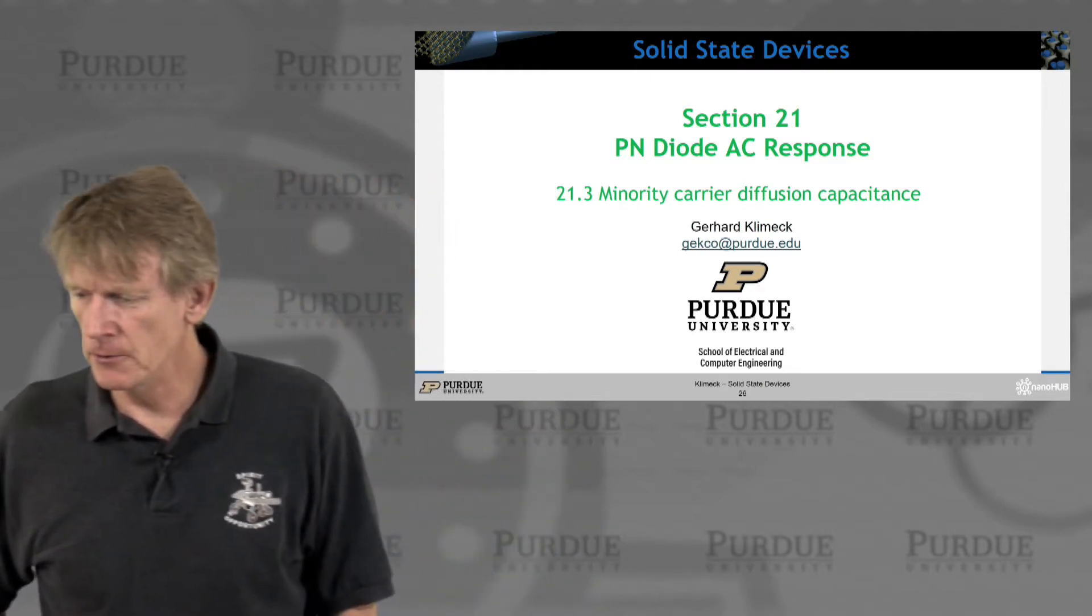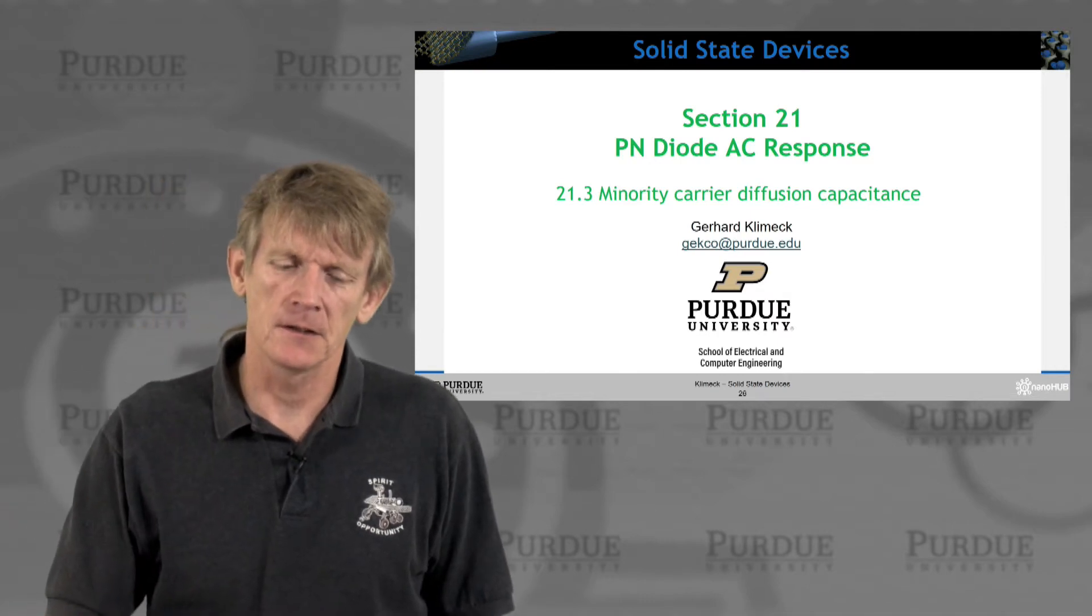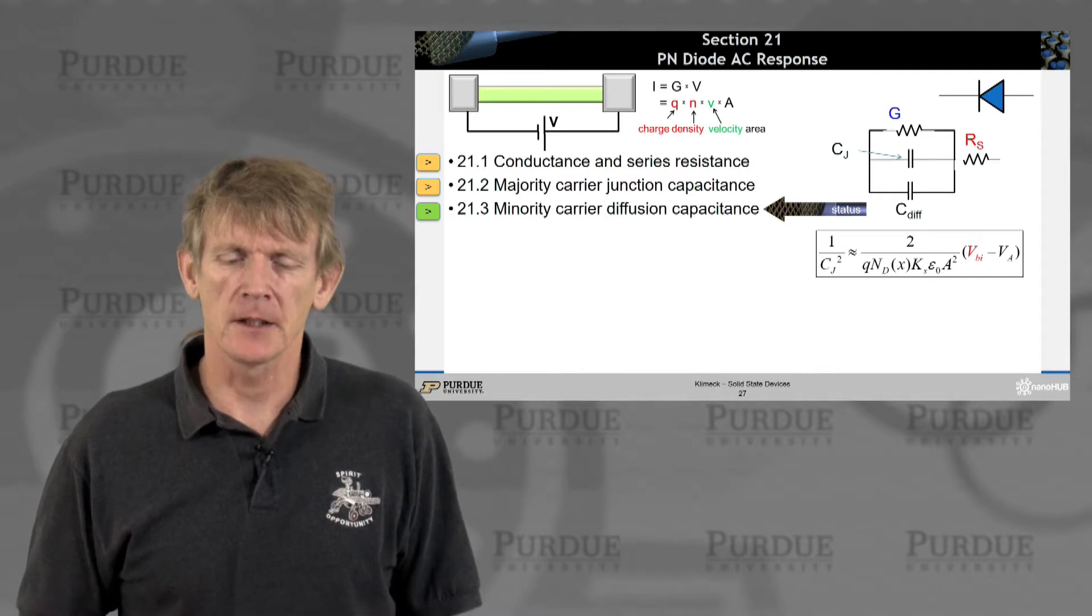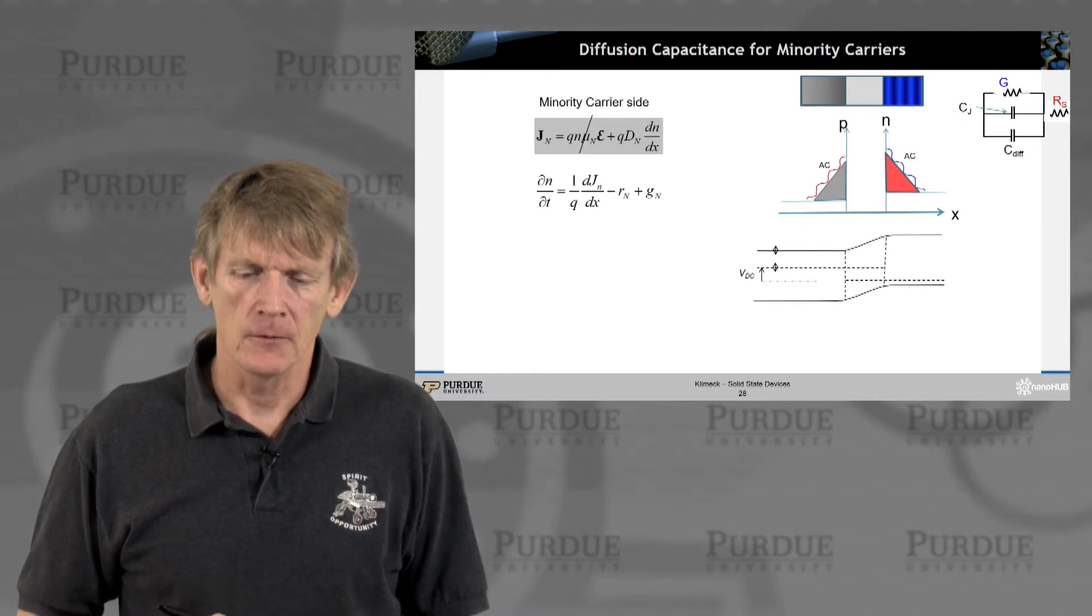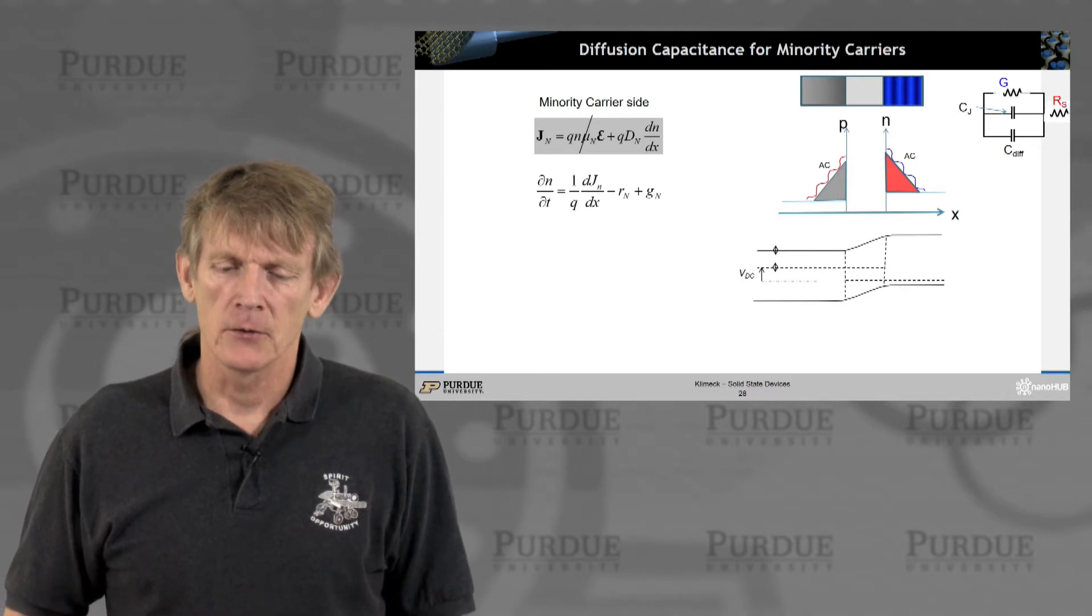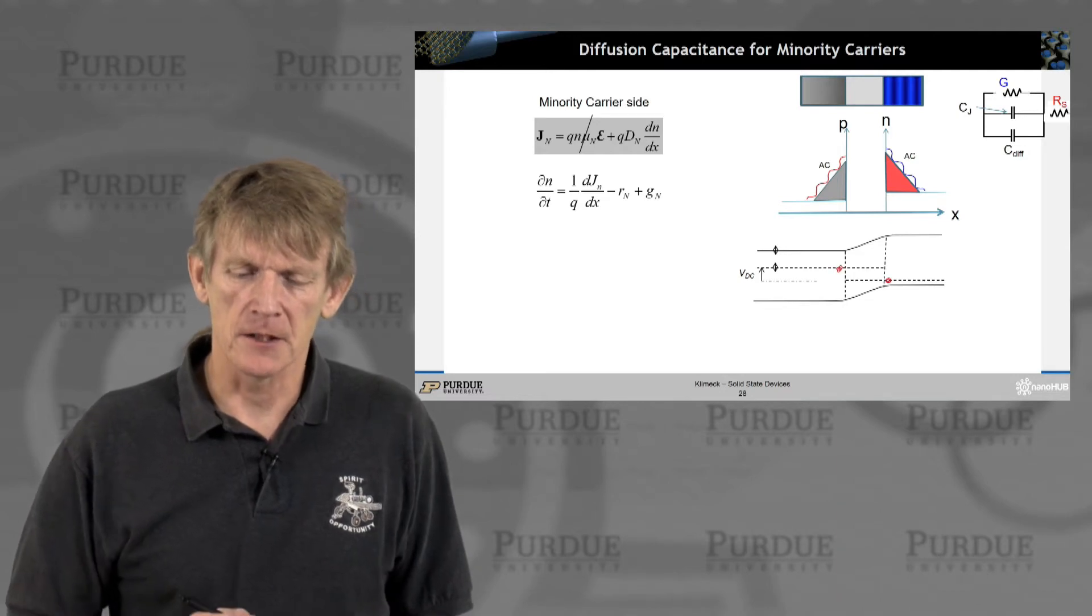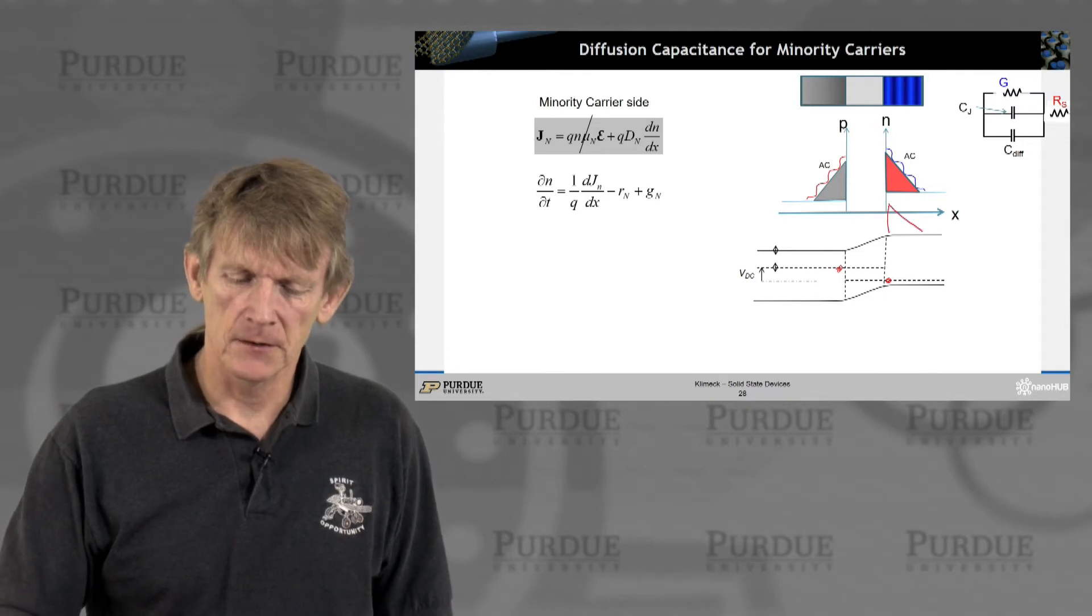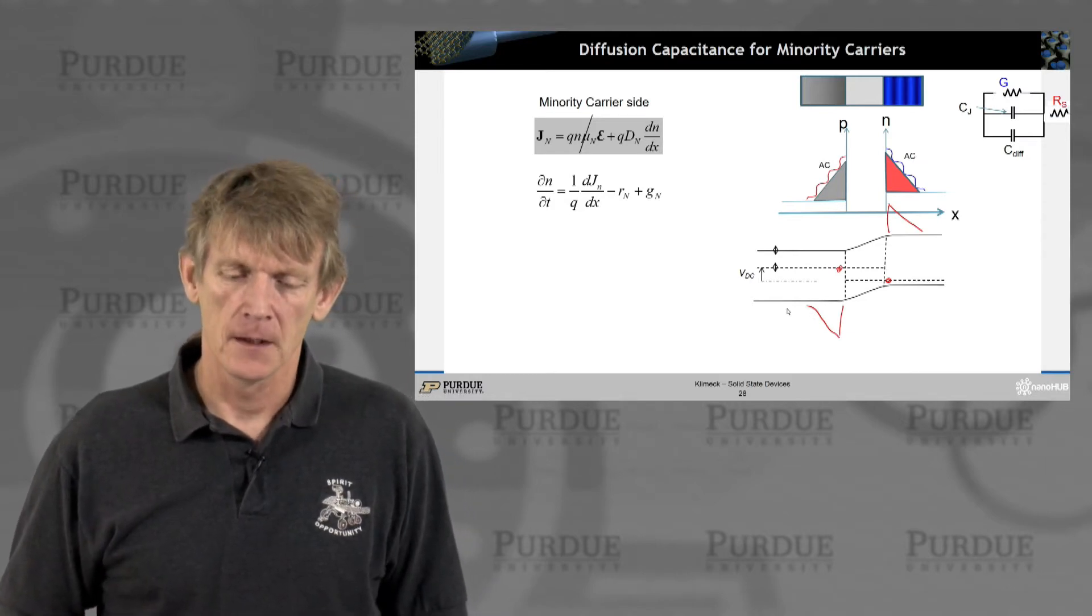Let's talk about minority carrier diffusion capacitance in a PN diode. In the sequence of things, we have this equivalent circuit model, and we're on the last element. So far we looked at majority carriers and worried about their response on both sides of the junction. But we're also injecting carriers in forward bias in this direction and in this direction, like we sketched before.